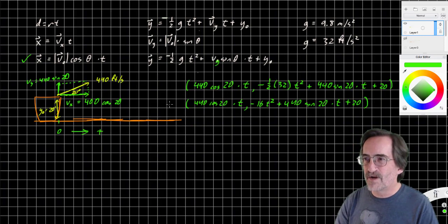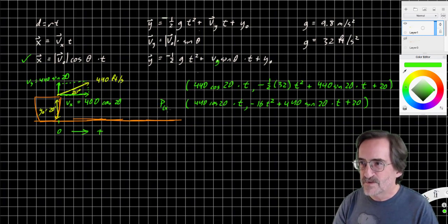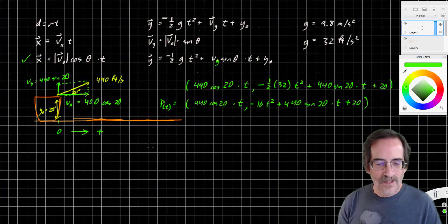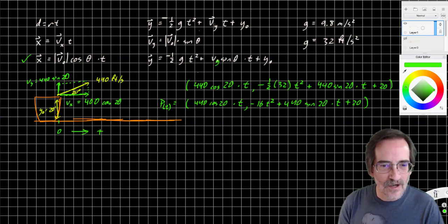So there's our parametric equation. Our position, in terms of x and y, or position in terms of t, time, position as a function of time, is going to be that. So let's model it in Desmos.